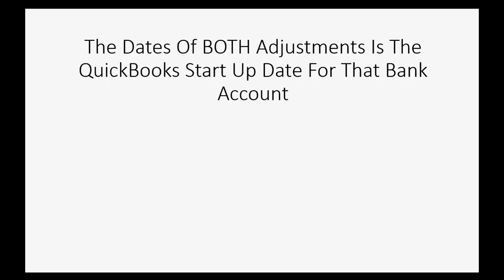The dates of both adjustments is the QuickBooks start-up date for that bank account. In other words, you didn't really know what the book balance was until all the checks that you marked as cleared really did clear. Now that all those checks have cleared, you know the real amount of the beginning book balance — and that's why the date of that adjustment is the start-up date. It's the same date as the original beginning balance adjustment.